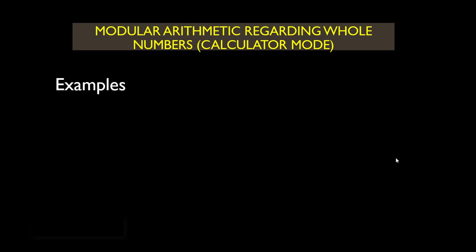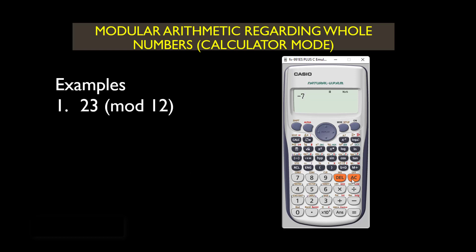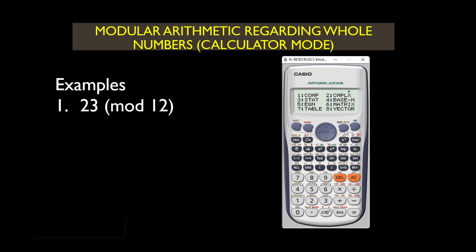Now let's look at some examples in a practical way with the calculator. Number 1: 23 mod 12. Press the AC key to clear, press the mode key, then select option 4 which is base-N. To find the answer, type 23 minus 23 divided by 12 times 12, then press equals. The result is 11, so 23 mod 12 is simply equal to 11.